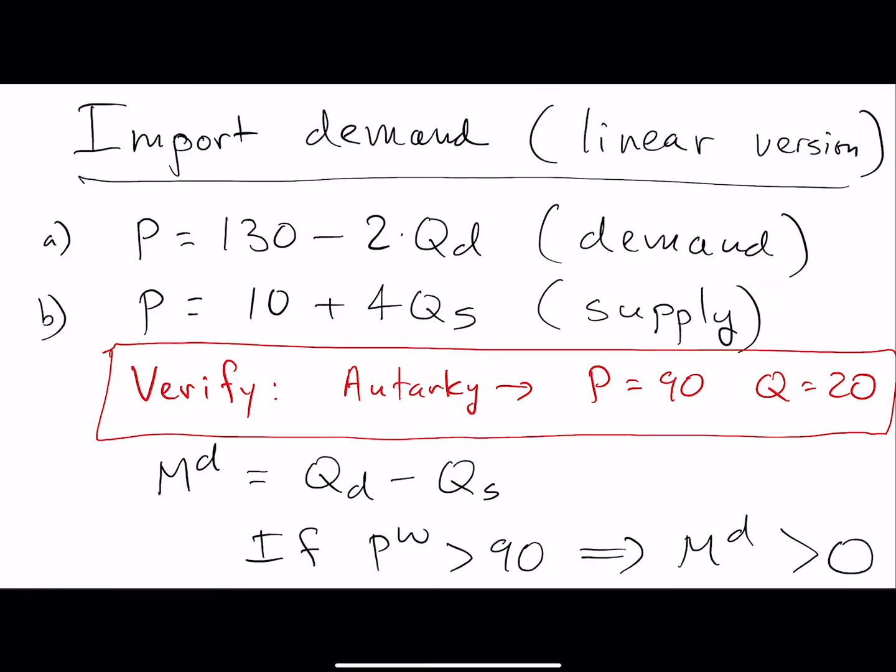I want to go into a little bit of detail on a linear version of this with specific equations so you can see how this might work. When we talk about, for example, the impact of tariffs and other types of trade policy interventions, we can use import demand just as easily as the domestic supply and domestic demand. The particular example that I've got up here with the demand curve is a combination that we've seen before in previous videos. You'll recall that in autarky with this set of relationships, the autarky price was $90 and the associated quantity that's both supplied and demanded is equal to 20.